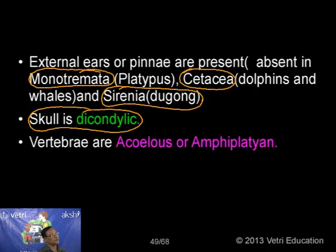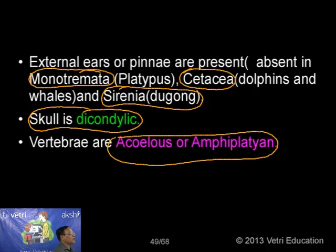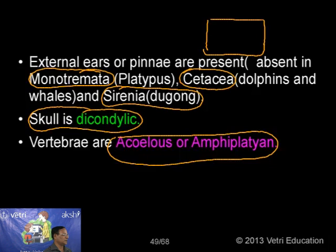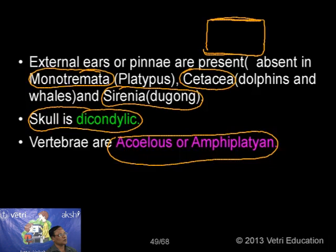In birds the vertebrae type is heterocoelous. In reptiles we have amphicoelous or procoelous. In human beings or all mammals, the vertebrae are acoelous — meaning there is no concavity on either side; the centrum is flat on both sides. Such a type is also called amphiplatyan as it is flat on both sides. There is no concavity, hence called acoelous or amphiplatyan.